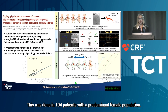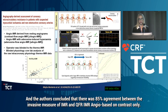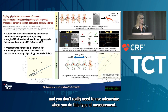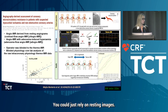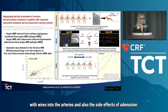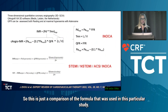When comparing performance, the contrast angio IMR showed the best correlation with actual invasive measurements. This was done in 104 patients with a predominantly female population with stable coronary artery disease and INOCA. The authors concluded there was 85% agreement between invasive IMR and QFR angio IMR based on contrast only. The caveat is that the formula was adjusted so you don't need to use adenosine — you can rely on resting images alone.